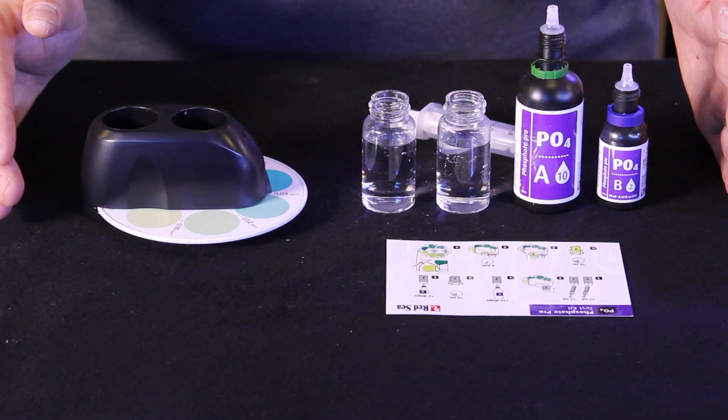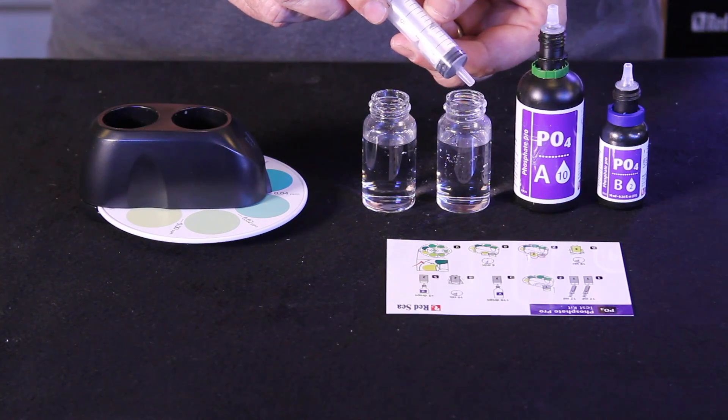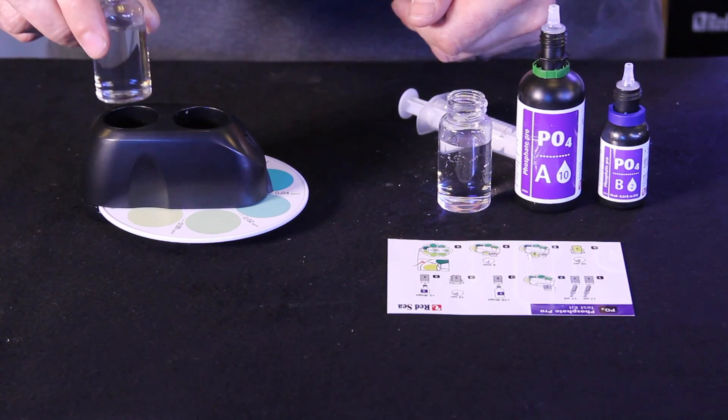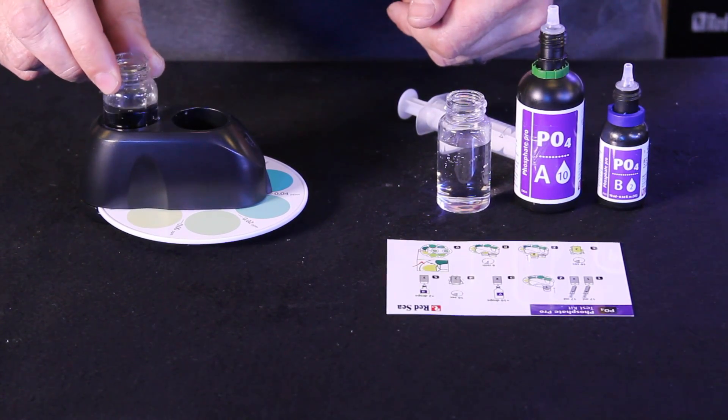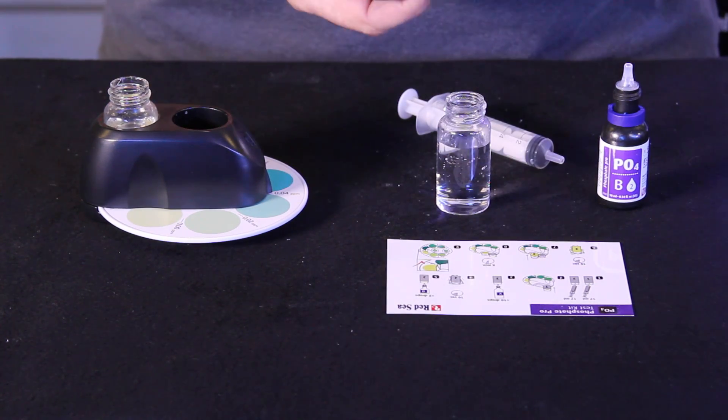All right now we're going to do Red Sea's Phosphate Pro test kit. We started by filling 17 milliliters of sample water into our two vials. The first vial is a blank sample and that's going to go in the outer section of our color wheel. The next vial is where we're going to put our test reagent.